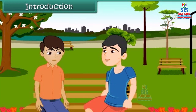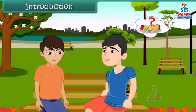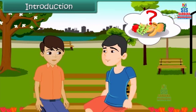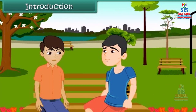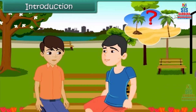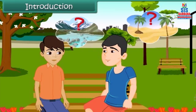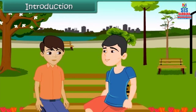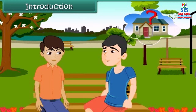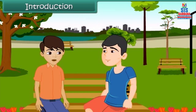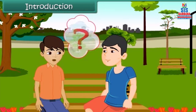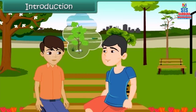She asked what they are which give us fruits, they give us wood, which can grow on land as well as in water, which are found in homes as well as in forests. It's simple, dear. They are called plants.